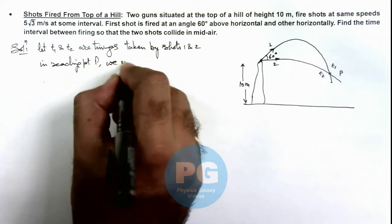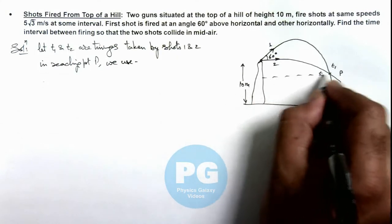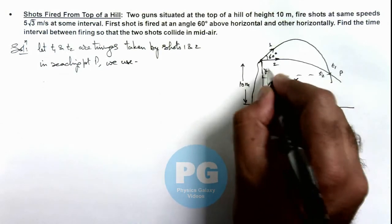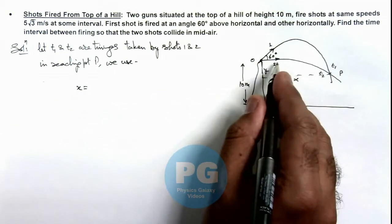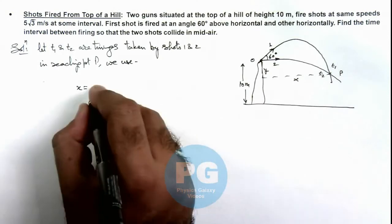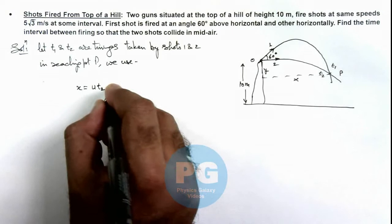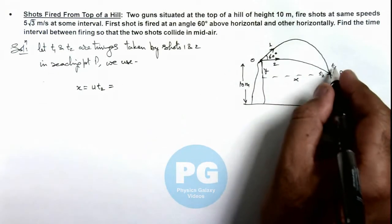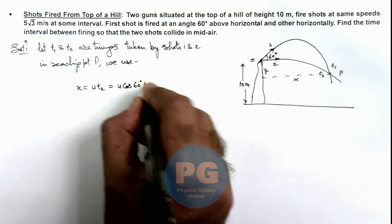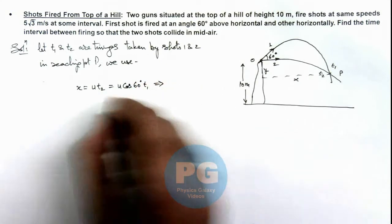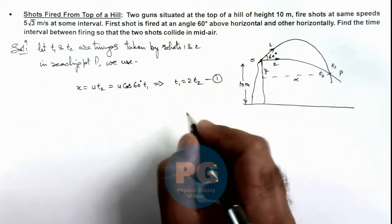Here we can use, if point p is having a coordinate x and y with respect to the projection point, then we can write x is equal to, for shot 2 we can write it'll take a time t2 so the distance travelled can be written as u t2. And for the shot 1 if it is taking a time t1 we can write it u cos 60 degree into t1. This implies on simplifying we are getting t1 is equal to 2 t2. So this is our first equation.